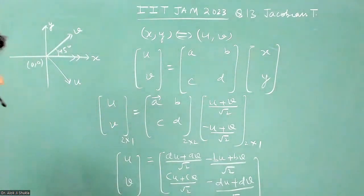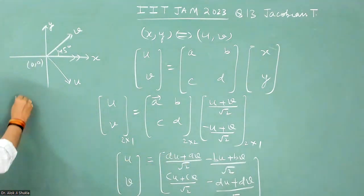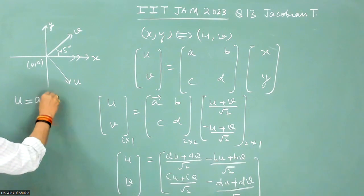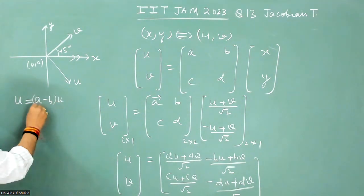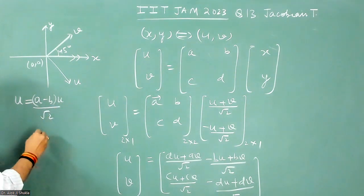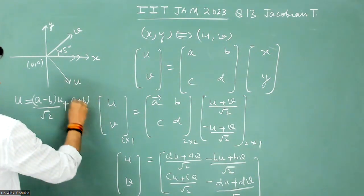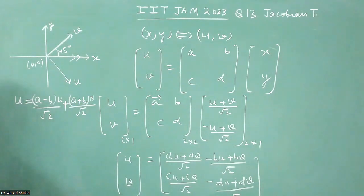So when you compare, what you get is U is equal to A minus B by root two times U, plus A plus B by root two times V.